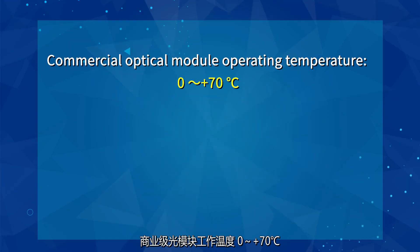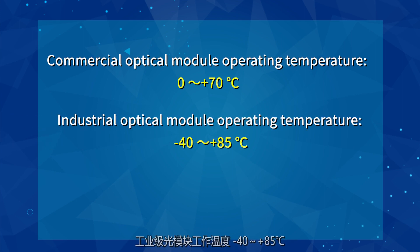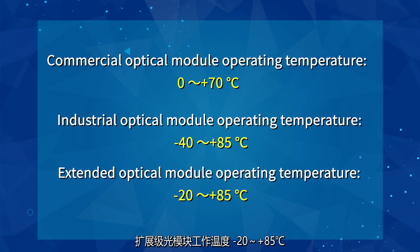Commercial optical module operating temperature: 0 to 70 degrees Celsius. Industrial optical module operating temperature: minus 40 to 85 degrees Celsius. Extended optical module operating temperature: minus 20 to 85 degrees Celsius.